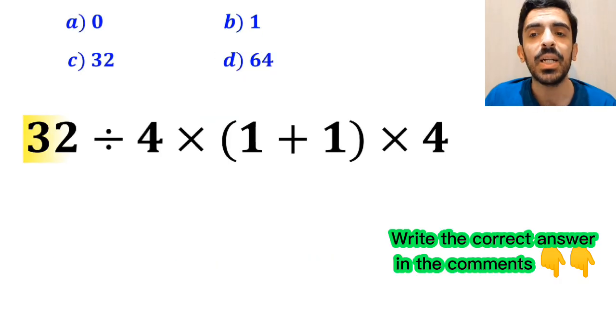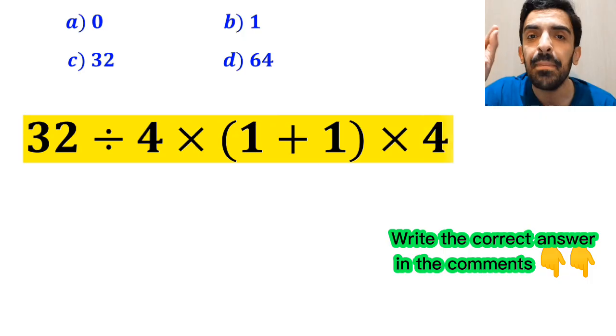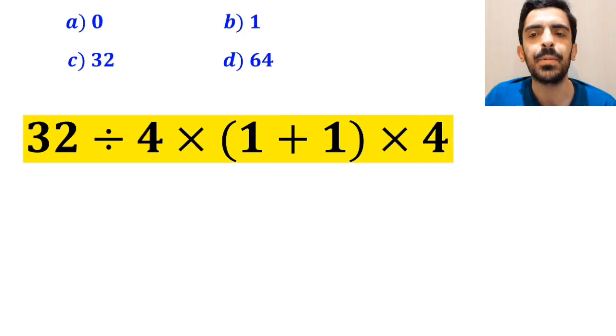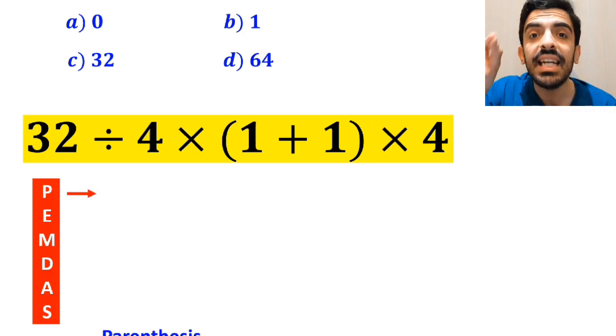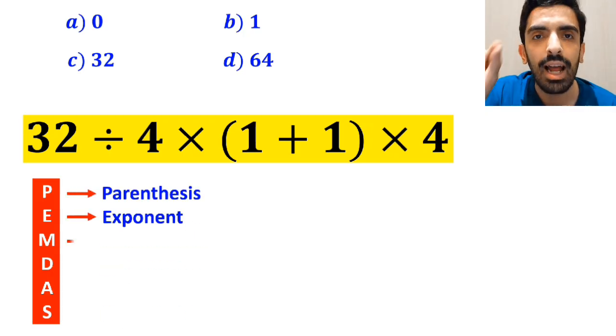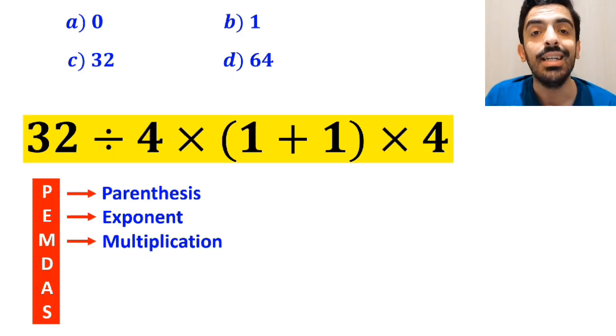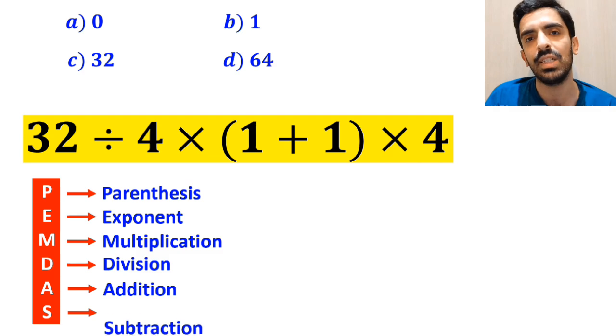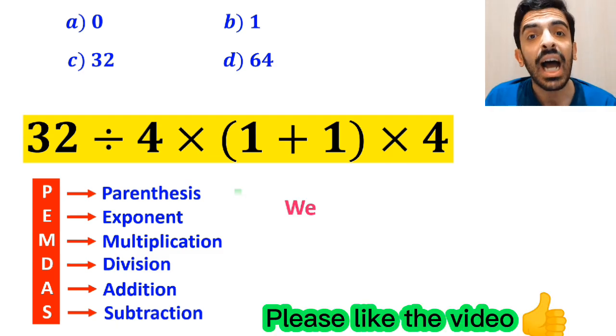All right, now let me explain step by step how to solve this expression properly. To solve this problem, we must follow a rule that is called PEMDAS. And this rule: P stands for parenthesis, E stands for exponent, M stands for multiplication, D stands for division, A stands for addition, and S stands for subtraction.